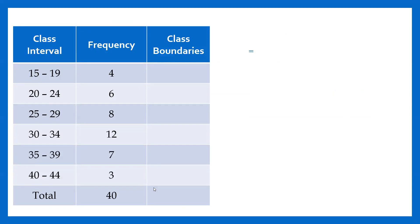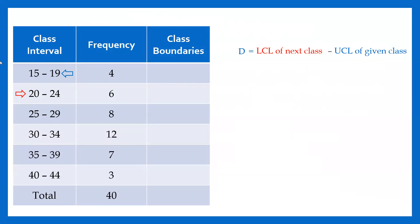Here is the example. The class intervals and the class frequencies are given. In the first step, we should calculate the class boundaries. When we create the class boundaries, we should look at the difference between the lower class limit of the next class and the upper class limit of the given class.